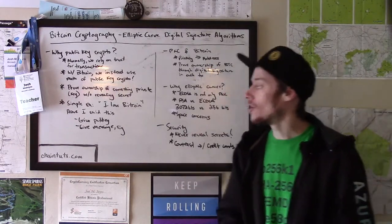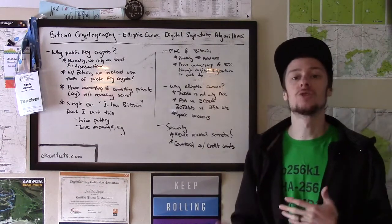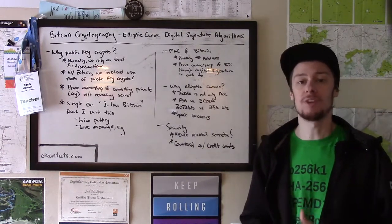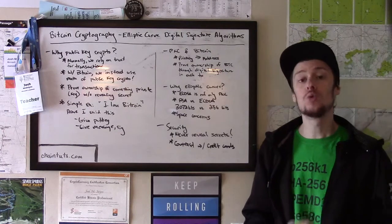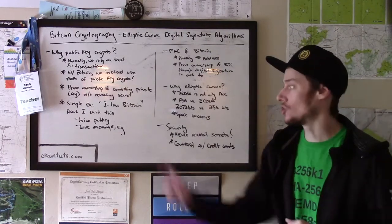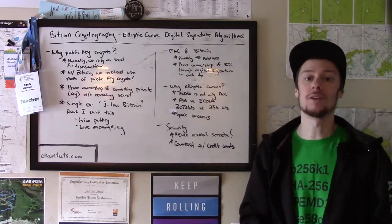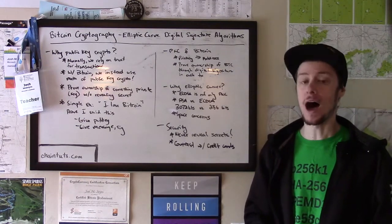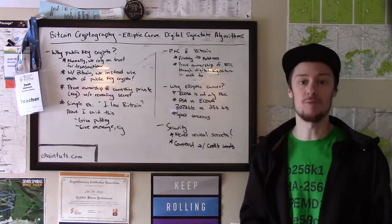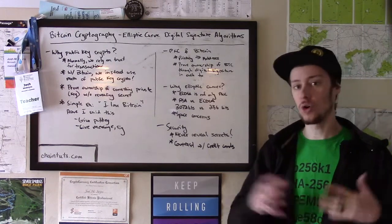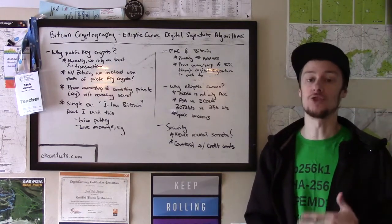You would then do what is called a digital signature using your private or secret key. You would digitally sign the message "I love Bitcoin," and then you would provide everybody you wanted to share that message with the actual message and this long string of bits that is called the digital signature.